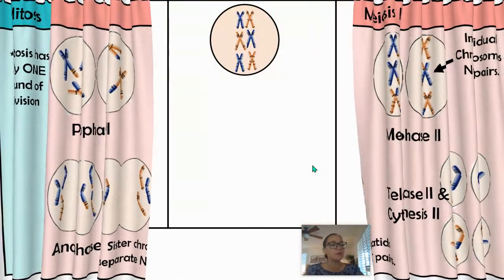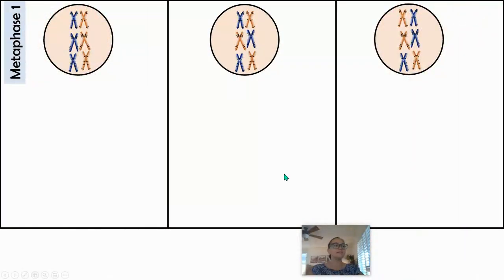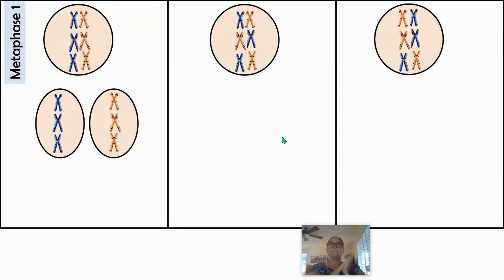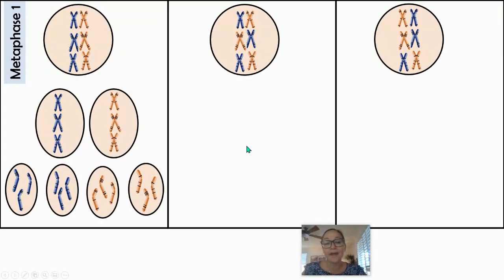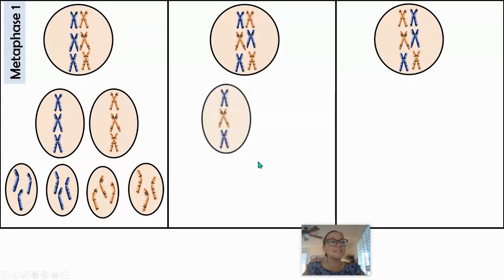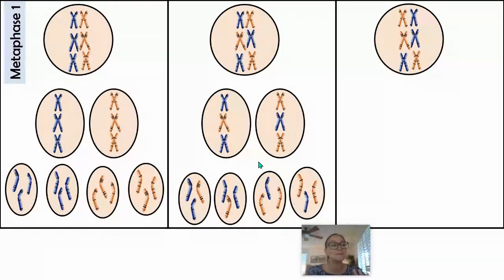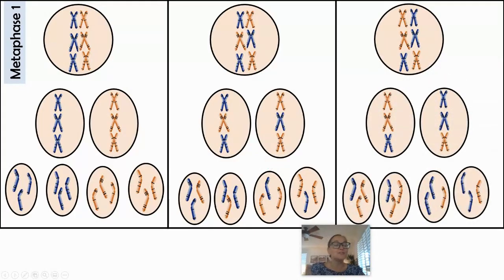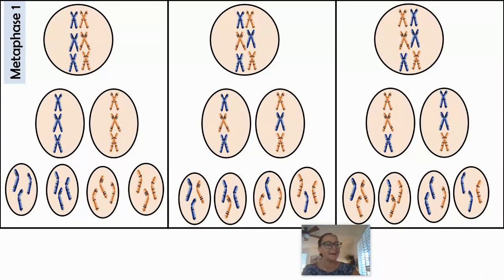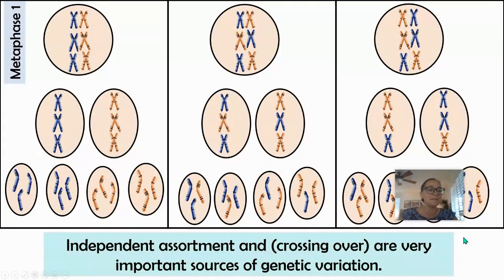Looking back at independent assortment: when pairs line up and then separate in meiosis one, and both resulting cells go through meiosis two, you can see different combinations of chromosomes ending up in the gametes. Every time meiosis occurs, how these pairs line up influences which chromosomes are passed on to offspring depending on which gamete fertilizes the egg. Crossing over and independent assortment are super important sources of variation in sexually reproducing populations.